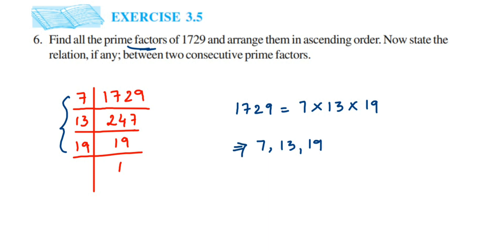Now let us see here between 7 and 13. If you see the gap between 7 and 13 is 6. So if I do 13 minus 7, the two consecutive primes, the gap is 6. Similarly, if I check the difference between 13 and 19, the gap is also 6.